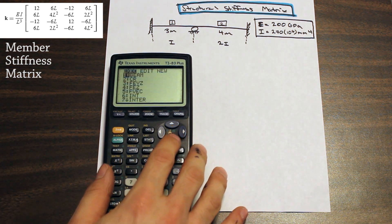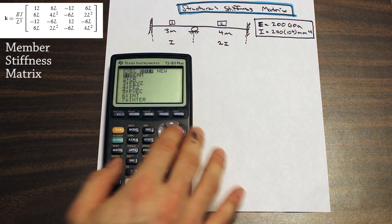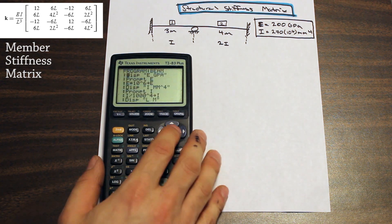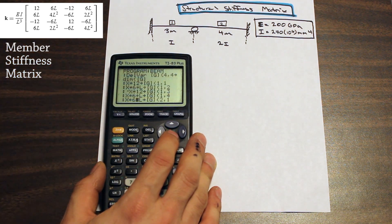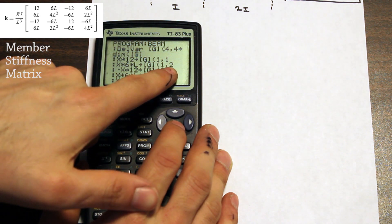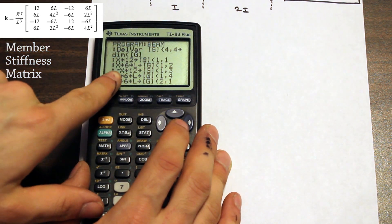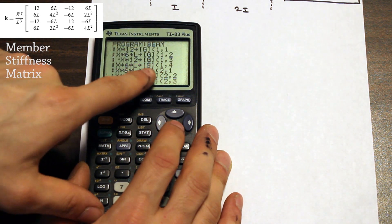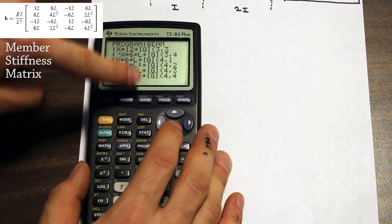Let me show you the rest of the inputs from the completed program I already have. For row 1, column 2, I have X times 6 times L stored in G(1,2). For row 1, column 3, it's negative 12 times X stored in G(1,3). I've filled in every single row and column entry, and the calculator performs all these operations and stores them in matrix G.